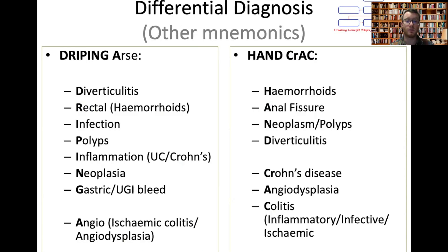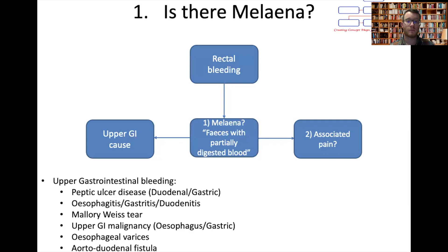There are also other differential mnemonics such as 'dripping arse and hand crack.' The first key step is to establish whether we think this is an upper GI cause. This is usually determined by whether it's melaena or not — melaena being the partial digestion of blood with faeces, with a very off-putting smell, described as very dark and black tarry stool.